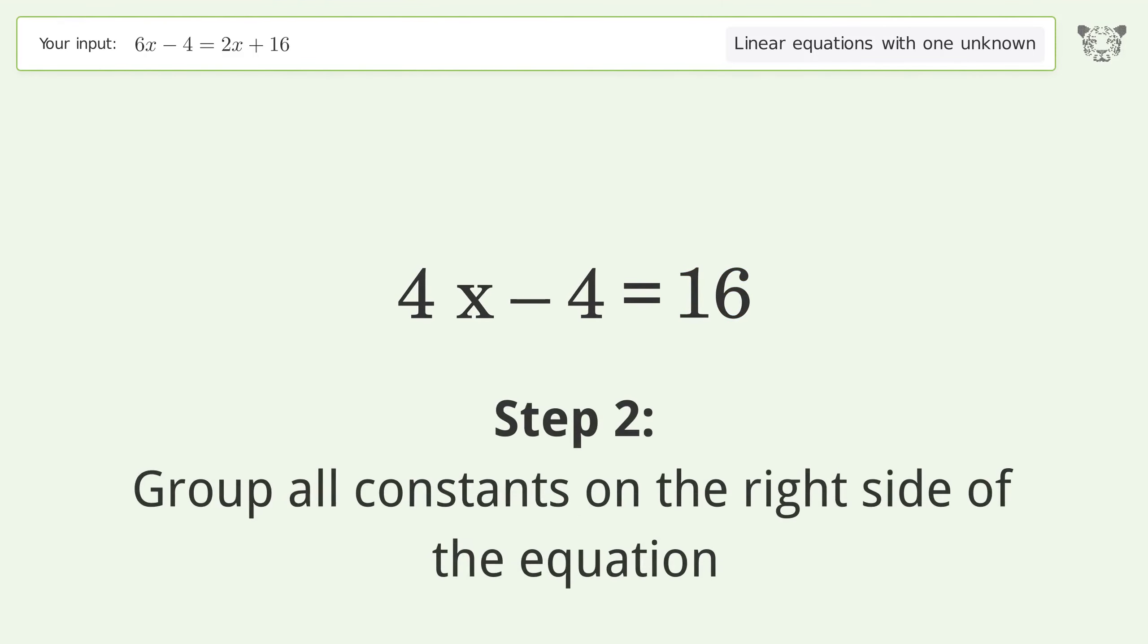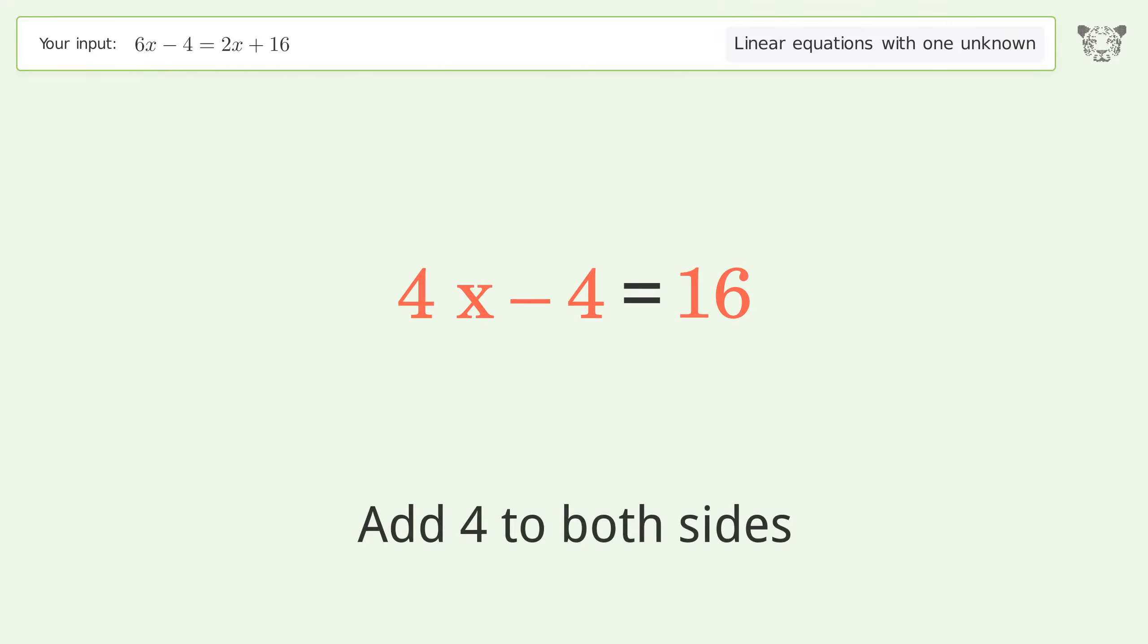Group all constants on the right side of the equation. Add 4 to both sides. Simplify the arithmetic.